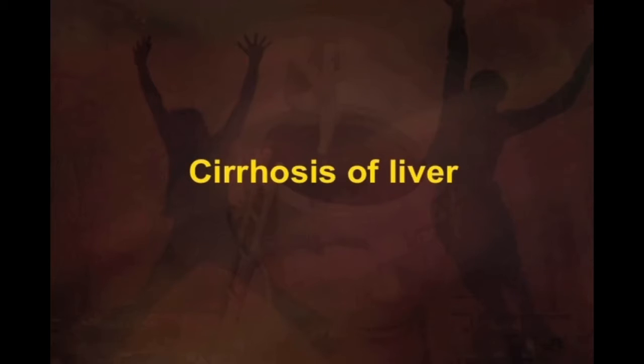Another dangerous condition that the alcoholic may fall prey to is cirrhosis of the liver. Alcohol is considered a serious poison to the liver cells, and this is the basic reason why many fall prey to cirrhosis of the liver. The liver becomes heavily scarred and it becomes a deadly situation.